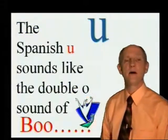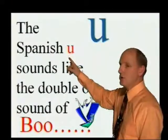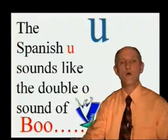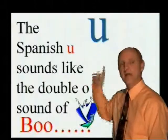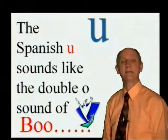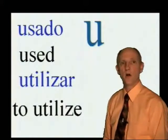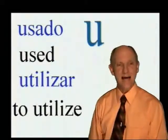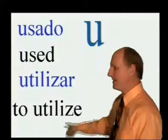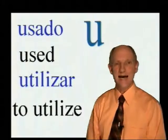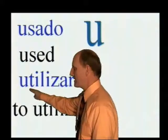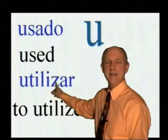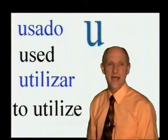We have one more vowel, and that vowel is the letter U. The Spanish U sounds like the double-O sound in the little word 'boo.' At Halloween when children go 'boo' — that 'ooh' sound comes from a double-O. That's the sound of this letter. The name of the letter is U, and the sound of the letter is 'ooh.' Looking at the words: 'usado' — U-sa-do — usado — and 'utilizar.' The first syllable is 'U,' the next is 'ti,' then 'li,' then 'zar' — utilizar. We'll find that the letter Z actually has the sound of an S. Utilizar.